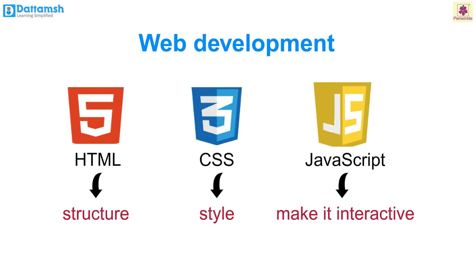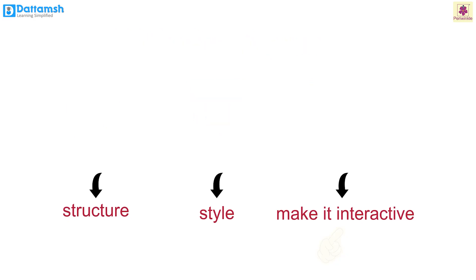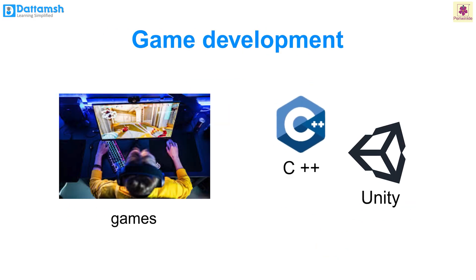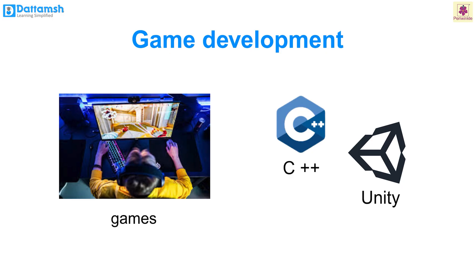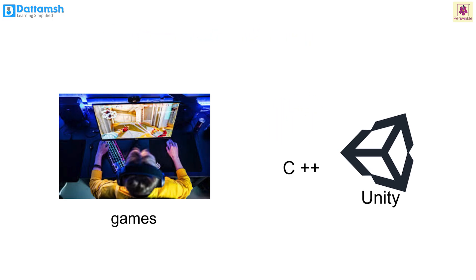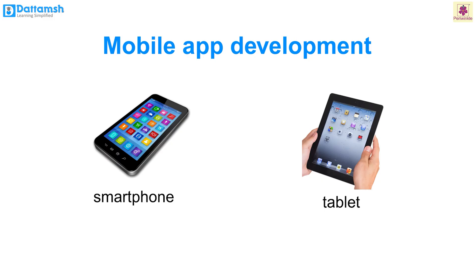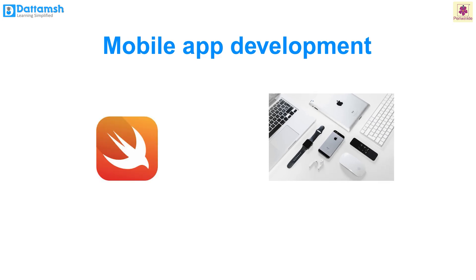Programmers use HTML to build the structure, CSS to style it, and JavaScript to make it more interactive. Game development: for video games, programmers use languages like C++ and Unity to create the game's world, characters, and challenges. This helps bring the fun and exciting parts of the games to life.